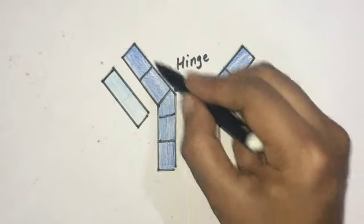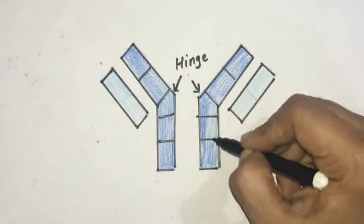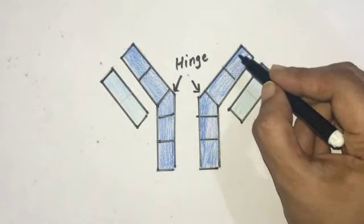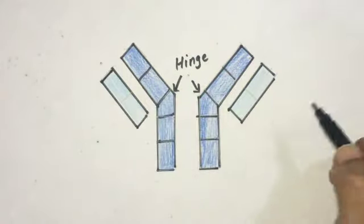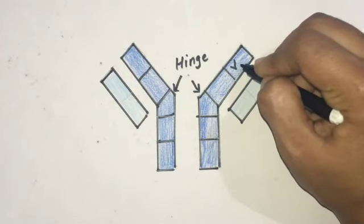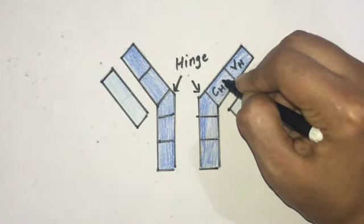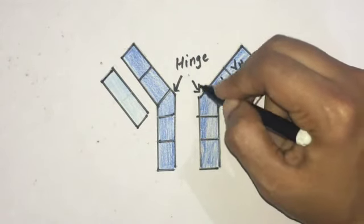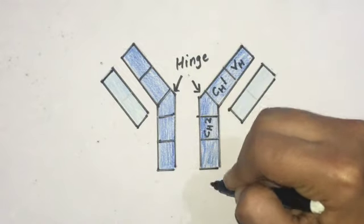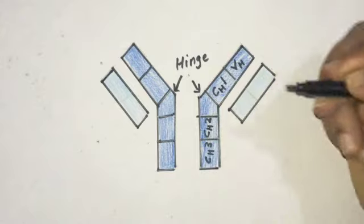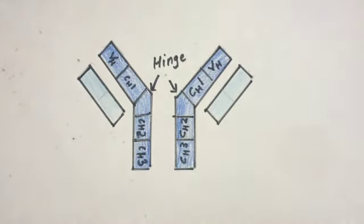This chain is called a heavy chain. These two chains are heavy chains, and these are light chains. The heavy chains are further divided into variable region and constant region. This region is variable, and this is constant. We name them: VH (variable heavy chain), CH1 (constant heavy chain region one), the hinge region, CH2, and CH3.